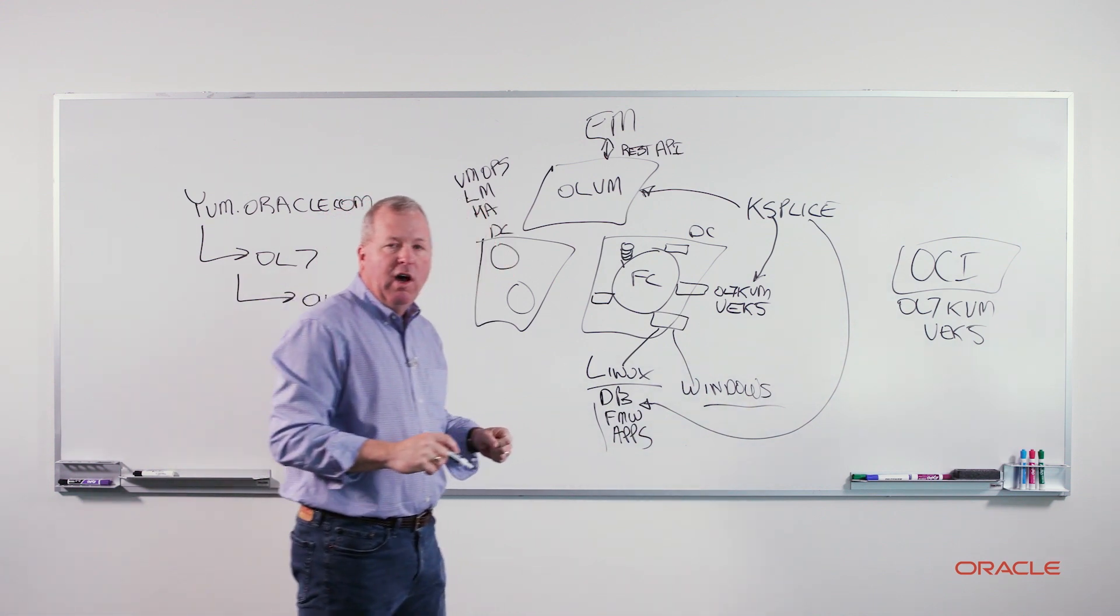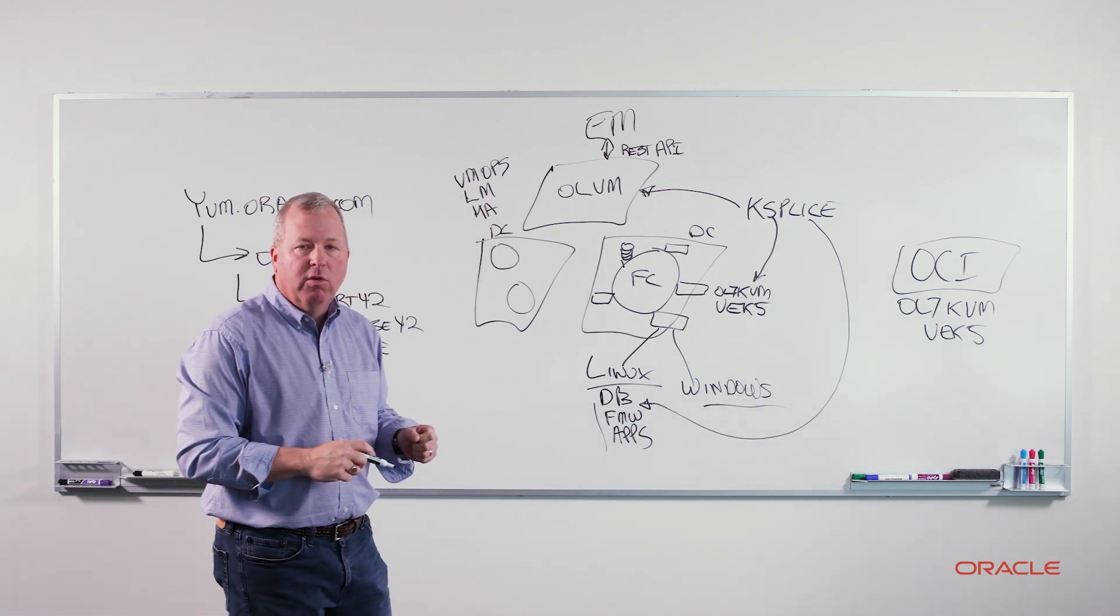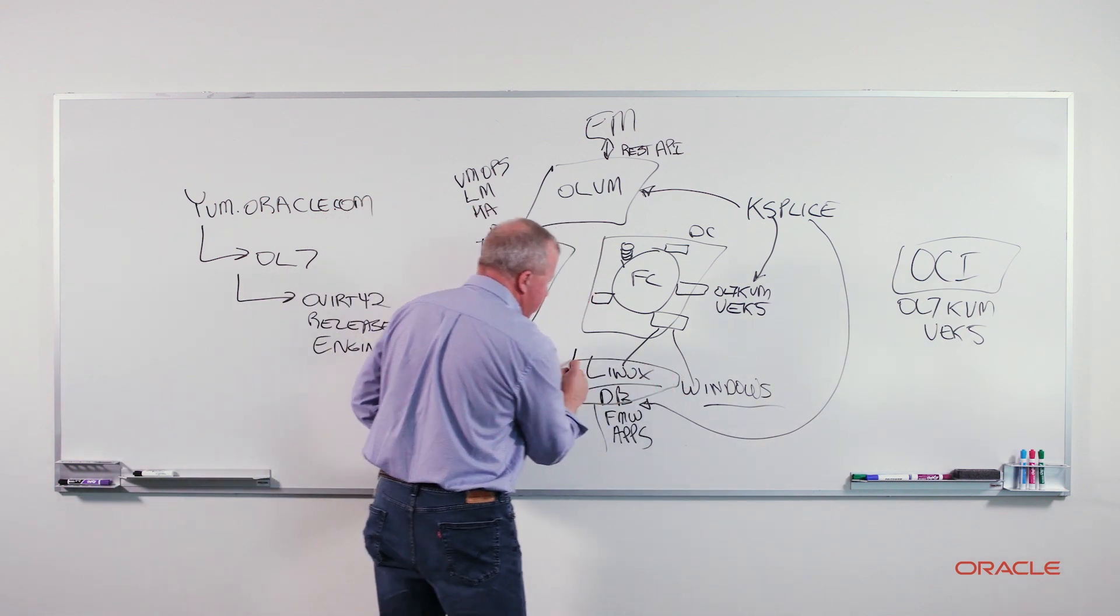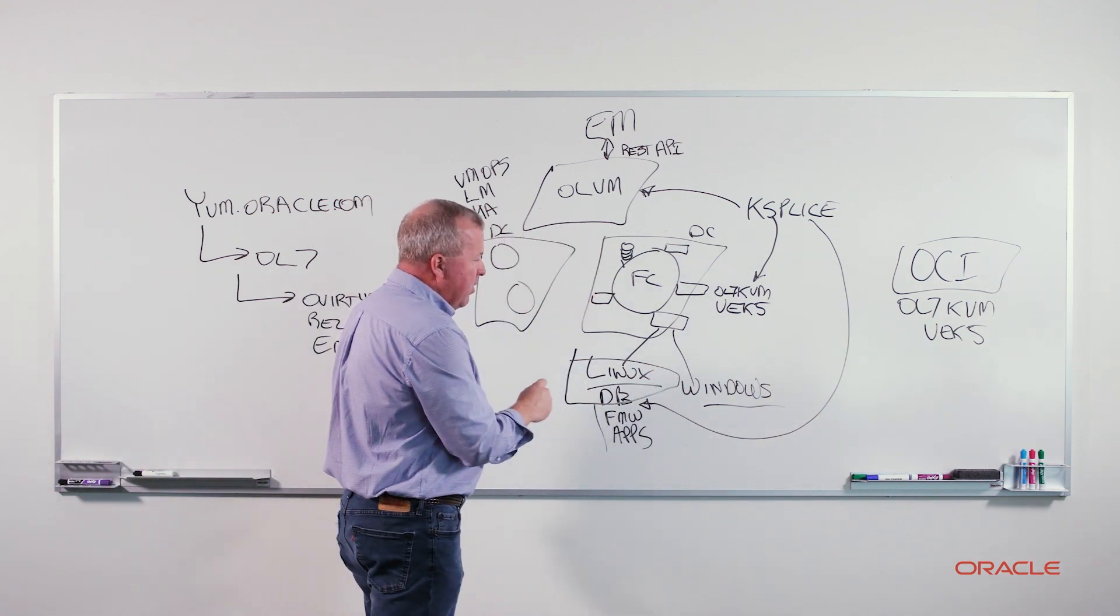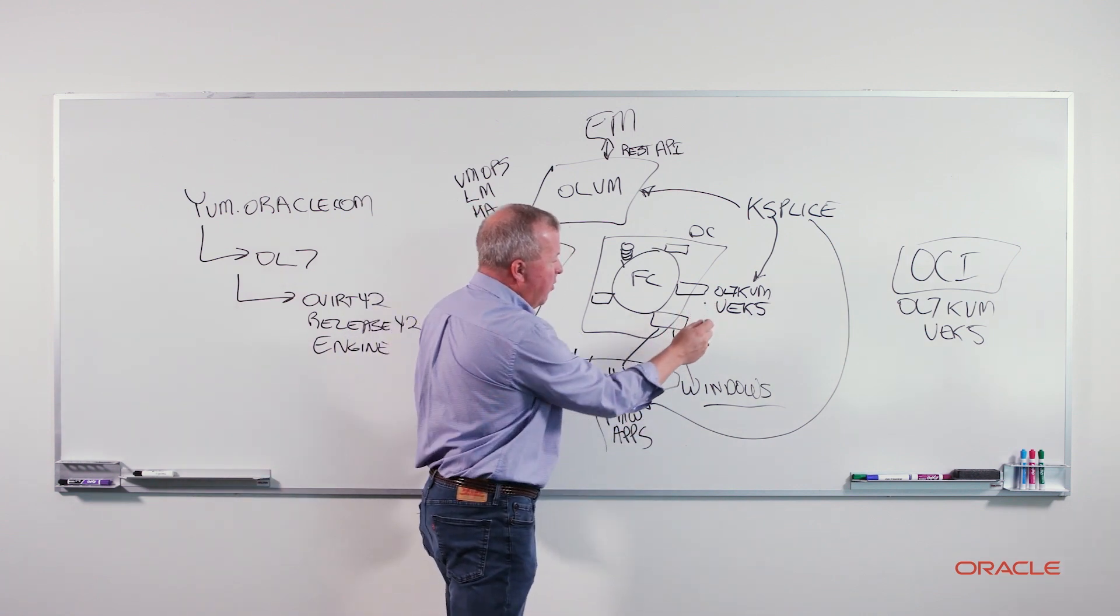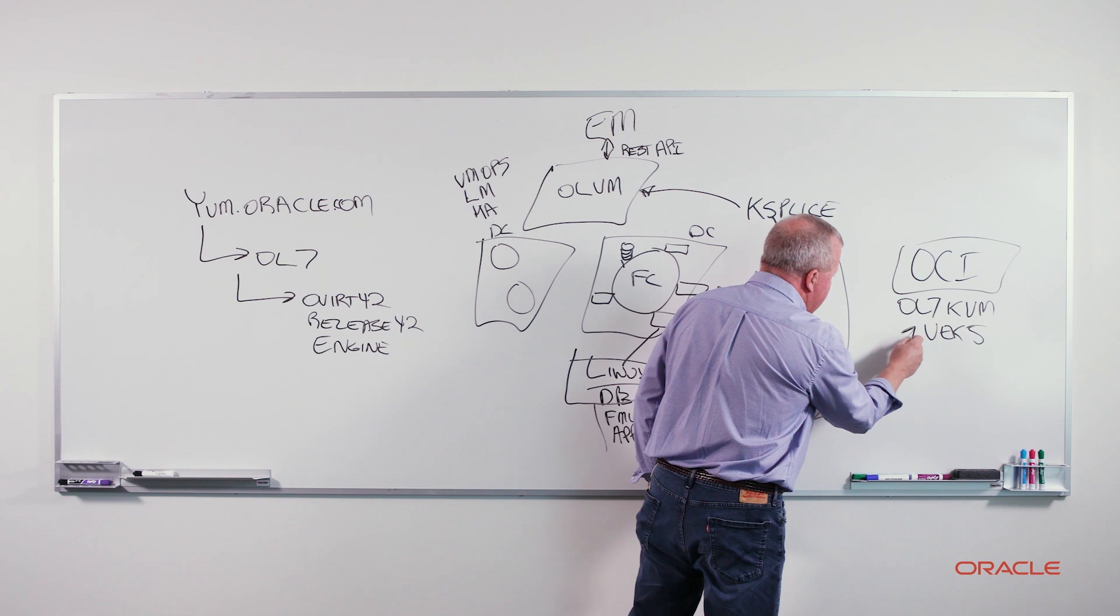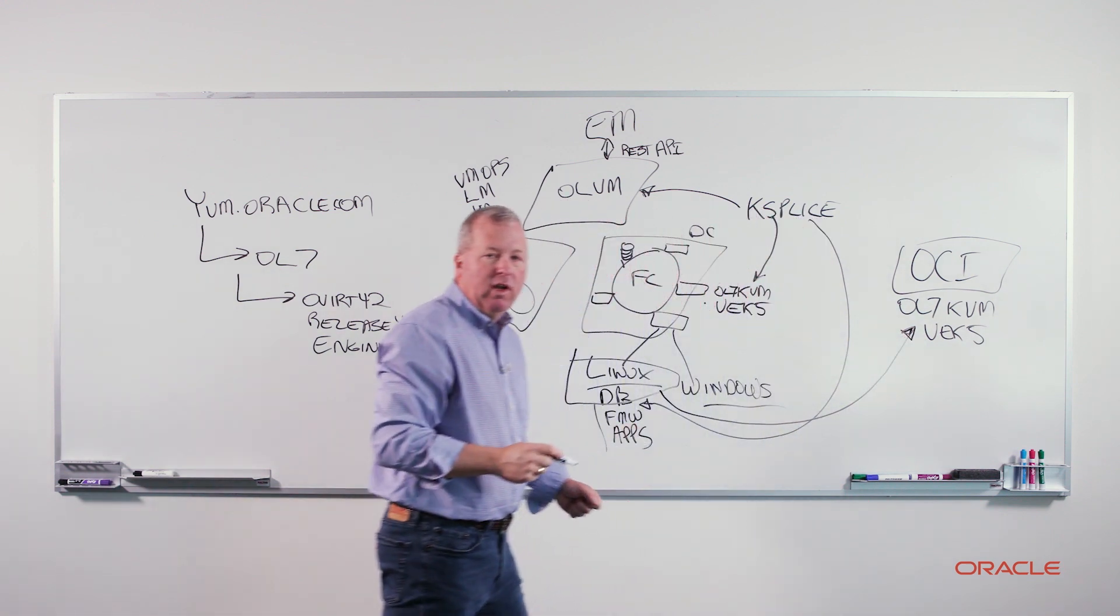So when you choose to run a hybrid cloud environment or you choose to move workloads into the cloud, it's a very simple process to take your virtual machines that are running on Oracle Linux, that are running on top of Oracle Linux KVM, and then migrate them over to that same exact infrastructure that's running in our cloud.